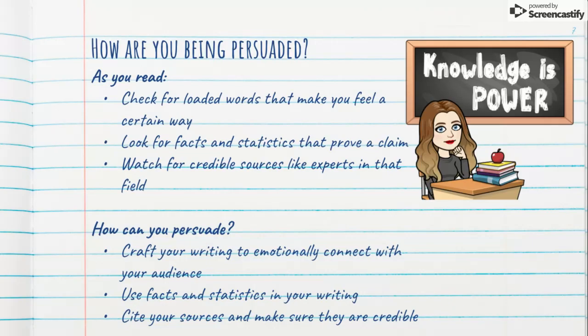Are these facts produced one time or over and over again? Watch for credible sources like experts in the field. Sometimes they can pull in people who aren't actually credible sources but that you tend to side with. If I brought in Oprah to talk about some scientific study, we believe in Oprah, but Oprah is no scientist. So be careful with things like that — logical fallacies. As you are reading, examine all three to see if you can find instances where you're being appealed to through logos, pathos, or ethos.